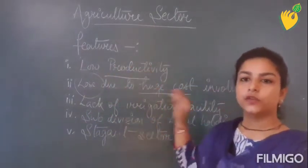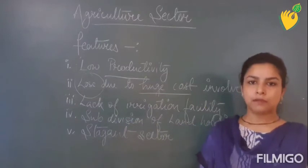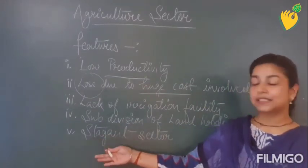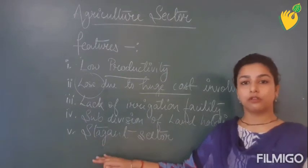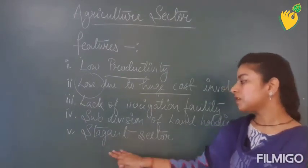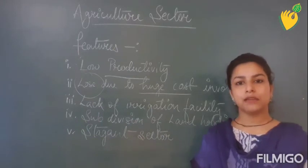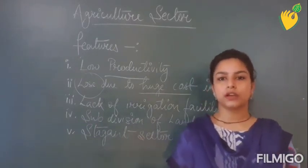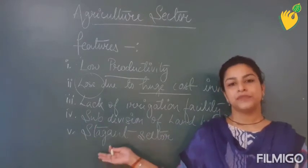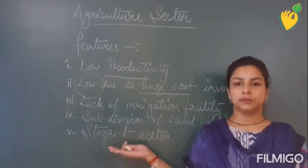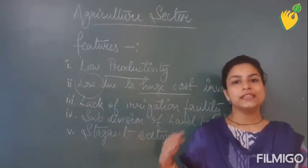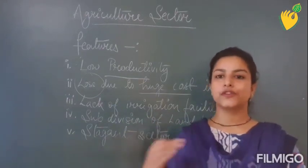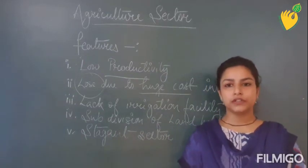Due to all these reasons, the agricultural sector during British or colonial rule was a stagnant sector. By stagnancy, it means there was no growth in the production of goods during that period. Due to all these reasons, the country faced backwardness, and no initiative was taken by the British rulers to overcome the flaws present in the agricultural sector.